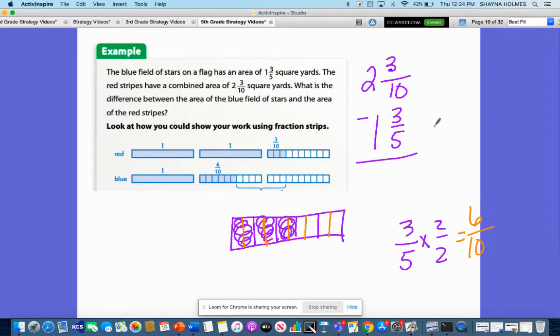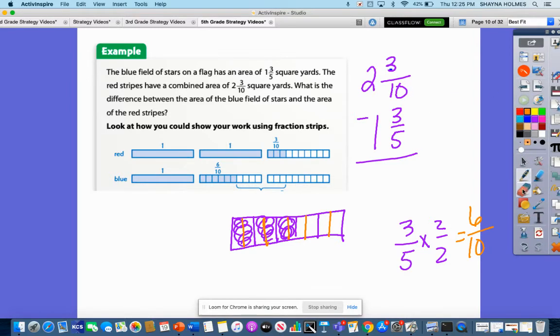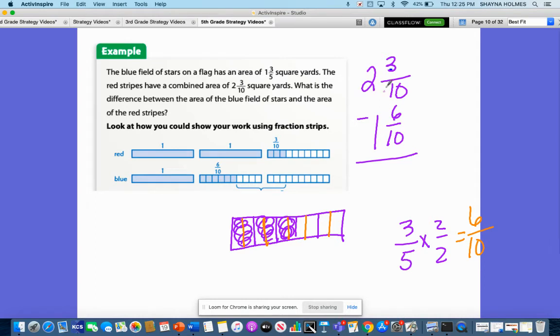That is a fraction that I can subtract and I can kind of compare to this first fraction up here because it has the same denominator. So if I erase this and then I would have my pen, I would have 6 tenths.